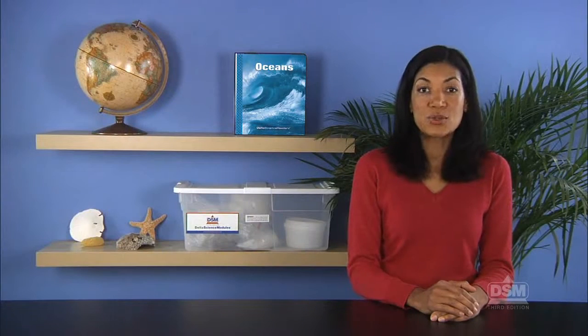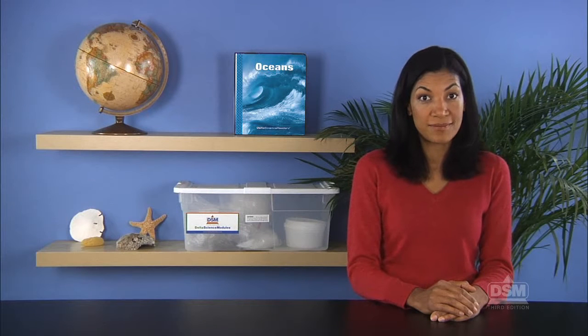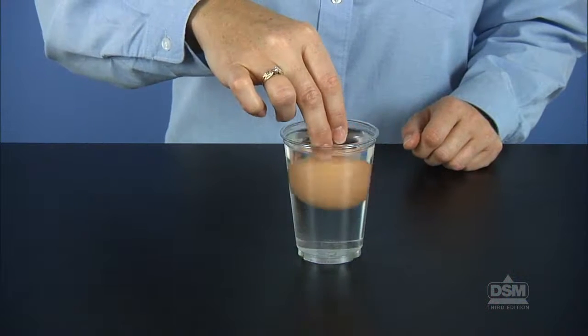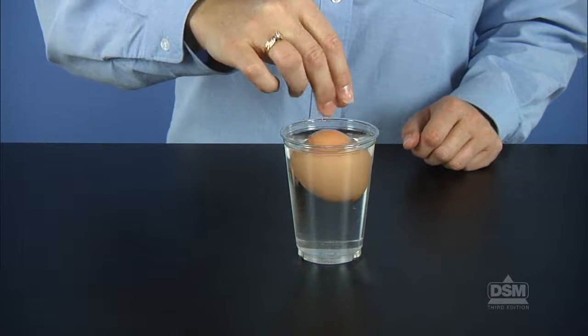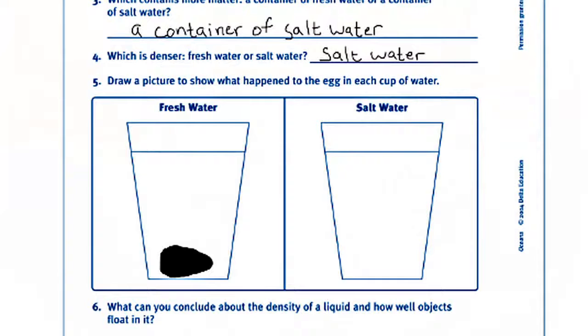Again, ask students to predict whether the egg will float or sink. Next, gently place the egg in the water and observe it float. Have students record their observations on their Activity Sheets.